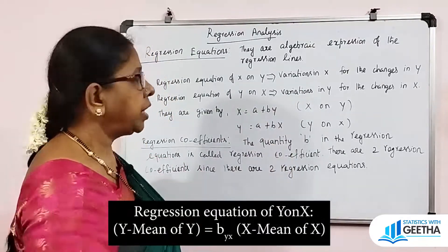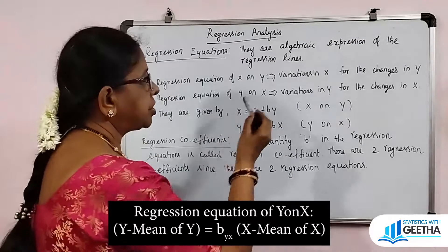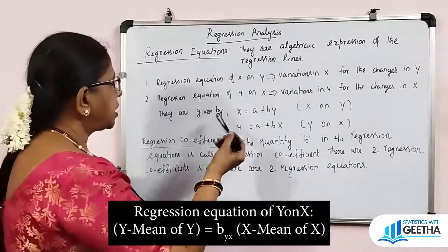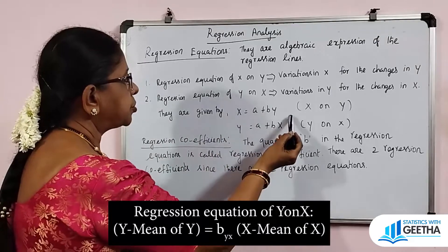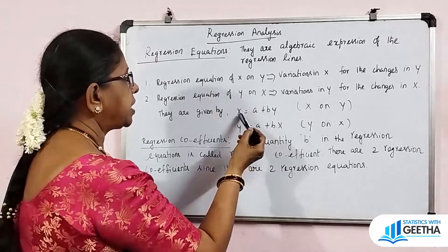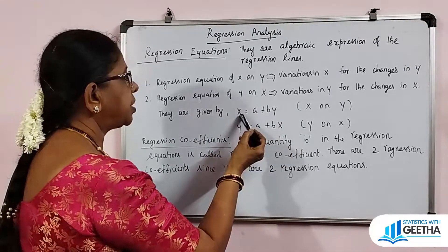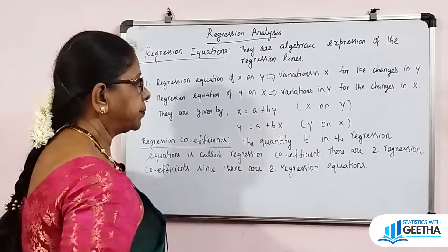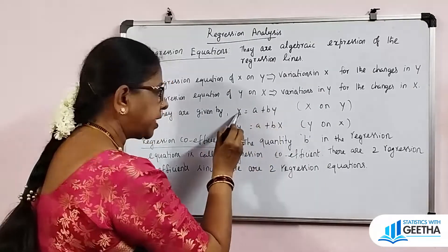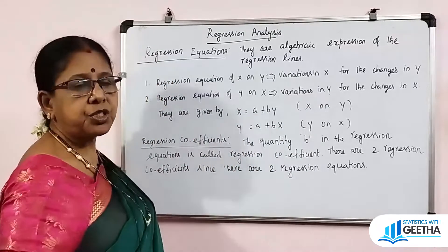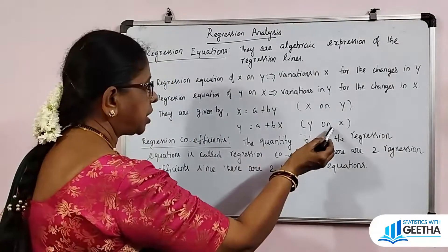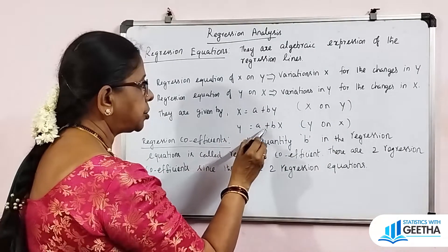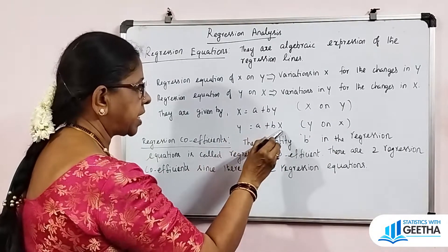The regression equation of y on x format is: y equals a plus bx. If we have the regression equation of x on y, it is: x equals a plus by. If we change y, the value of x will automatically change, and vice versa.